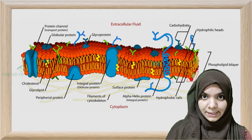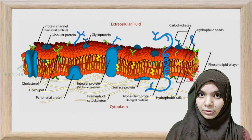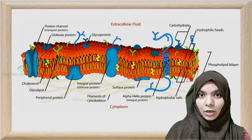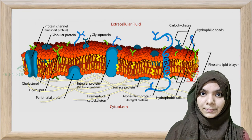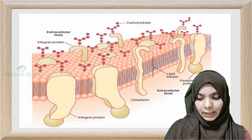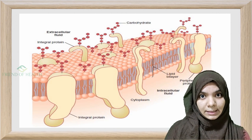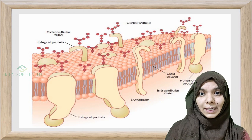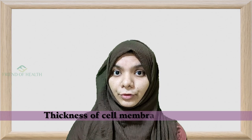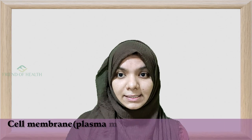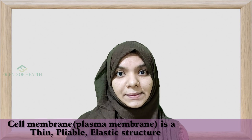Let us see some important points about the cell membrane, because cell membrane is also one of the high-yielding topics in physiology — many questions have come from this part. Cell membrane is composed of a biphospholipid bilayer. It is mainly composed of phospholipids at 55%, cholesterol at 13%, other lipids at 4%, and carbohydrates at 3%. That is why our cell membrane is known as a bilaminar lipid layer. The thickness of the cell membrane is 7.5 to 10 nanometers, and it is a thin, pliable, elastic structure. Phospholipid is the main component of the cell membrane.